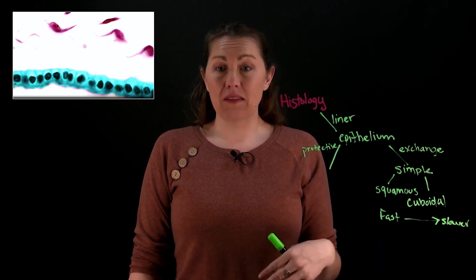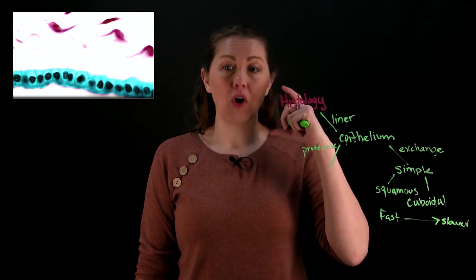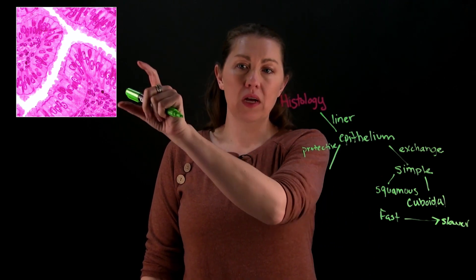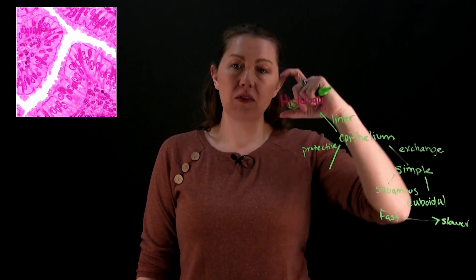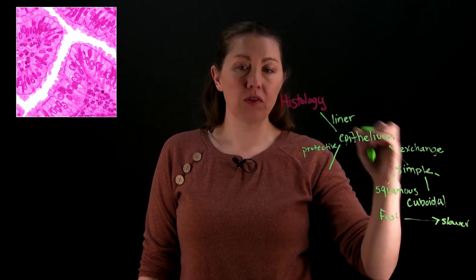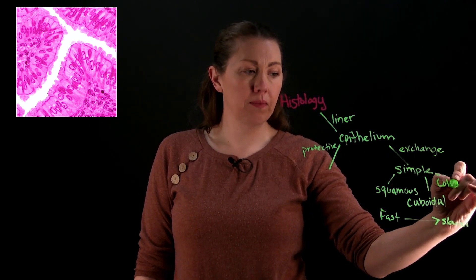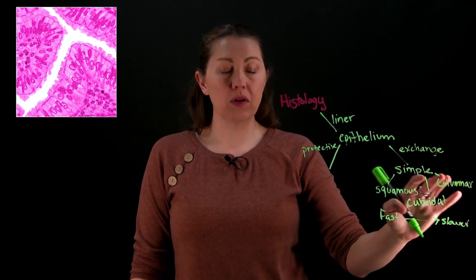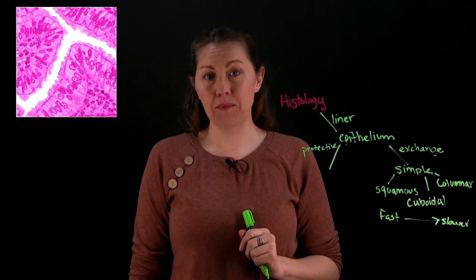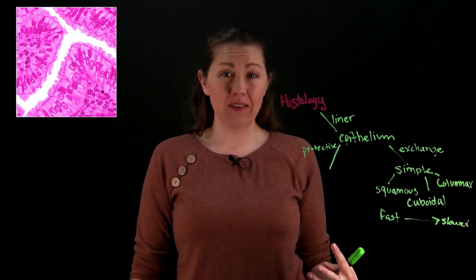Sometimes we're letting things into the body that are fresh and could be a pathogen, so we make the tallest simple option: simple columnar. The nuclei mostly look like a little oval, and the cells are taller than they are wide — columnar in shape. Simple columnar epithelium would line things like the digestive tract, along the intestines, allowing exchange but also processing things as they come in.